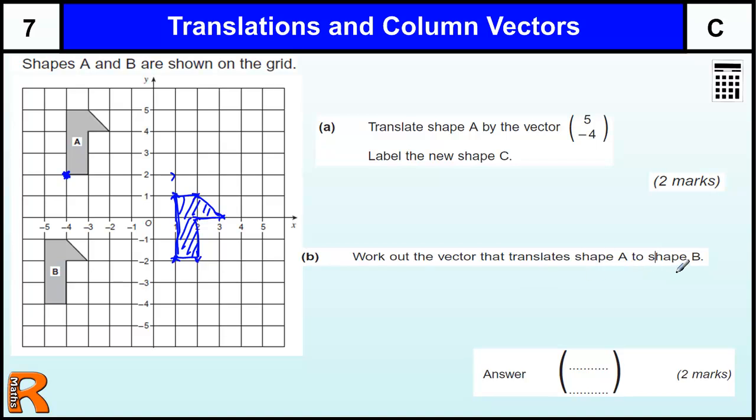shapes A to shape B. So what am I doing to get from this to this? Again, just pick one point and count how far it's going. It's going one to the left, which is minus one across, and it's going one, two, three, four, five, six down, so minus six. So one to the left is minus one and